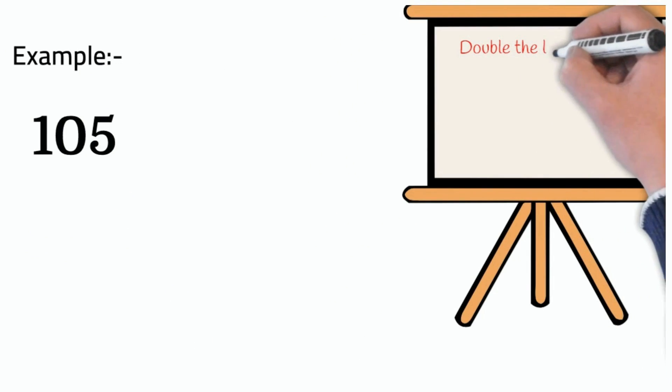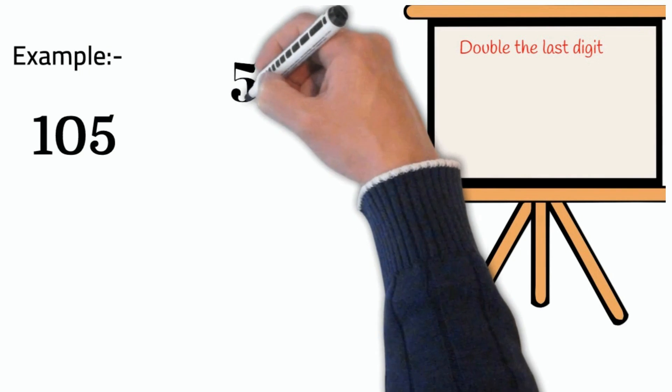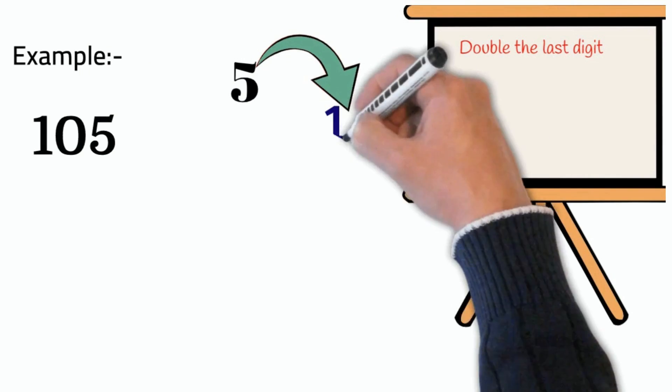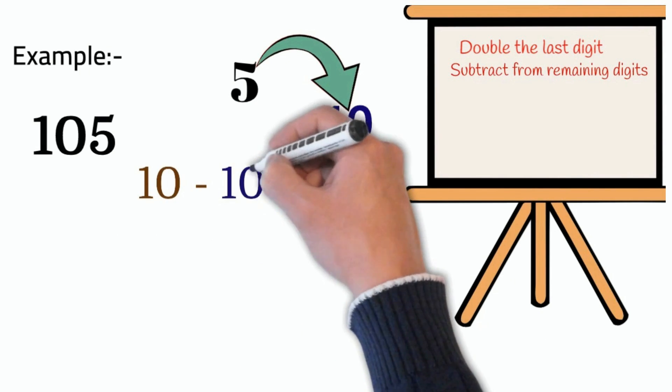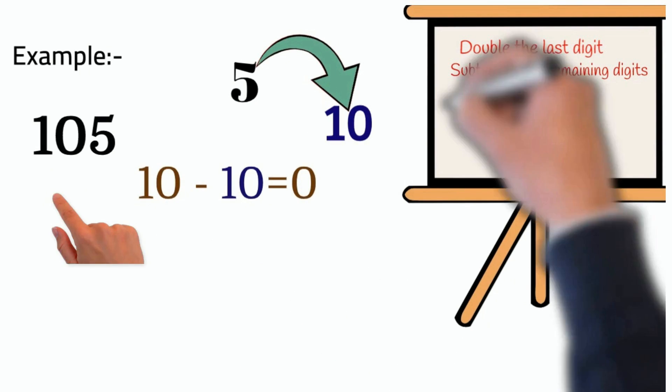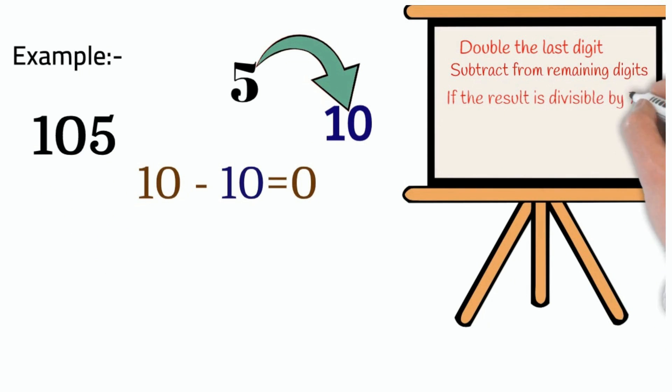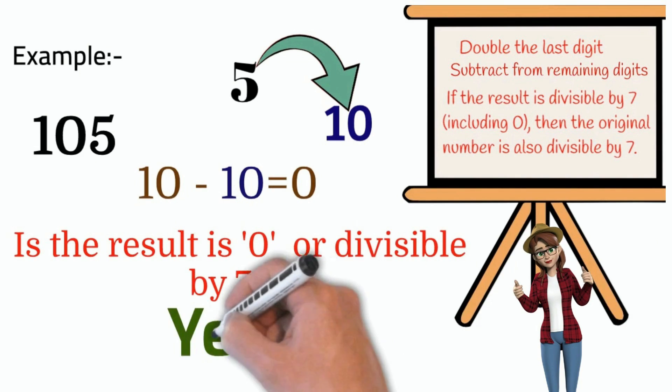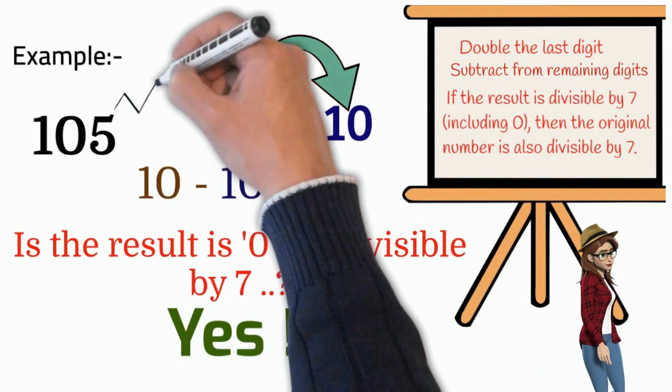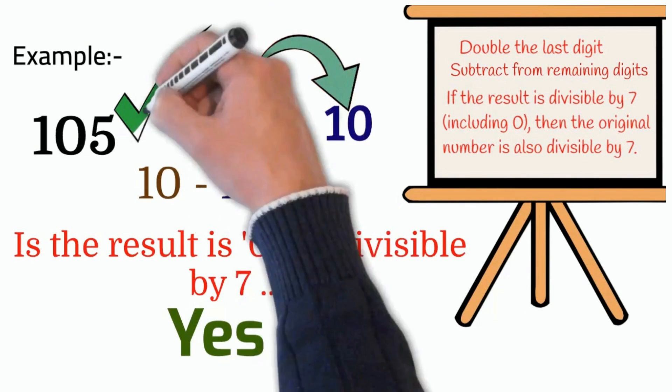One more example. 105. Can you tell the first step? Yes, double the five, ten. Then, remaining digits? One zero, ten. Okay, what next? Subtract. Ten minus ten, result is zero. Good. So, 105 is divisible by seven.